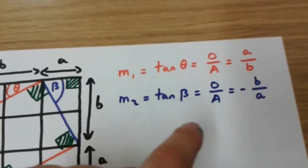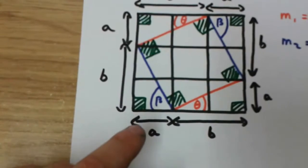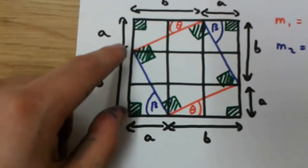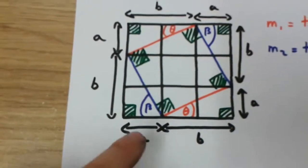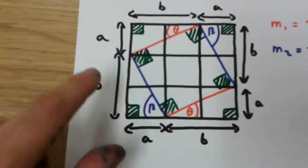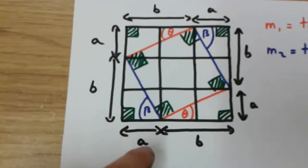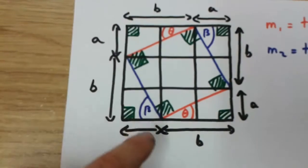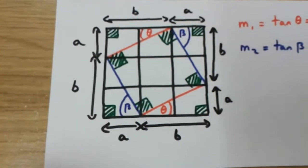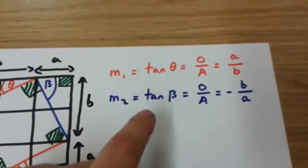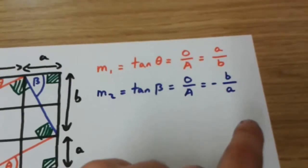Now, m2 is tan beta. But if we look at this diagram over here, the blue slope over here is negative. And tan beta is opposite over adjacent, so that's b over a. But since this slope over here is negative, we get minus b over a. So tan beta is opposite over adjacent, which is minus b over a.